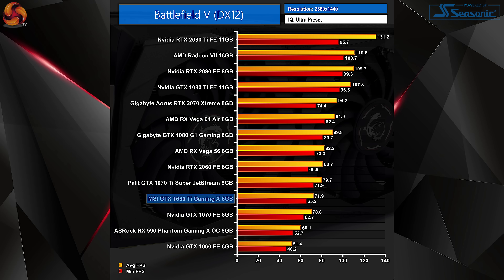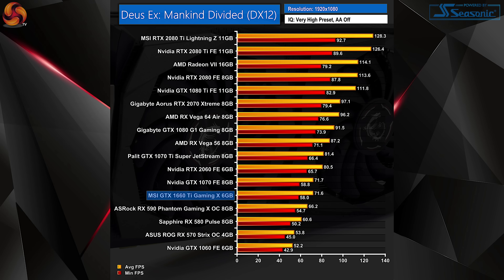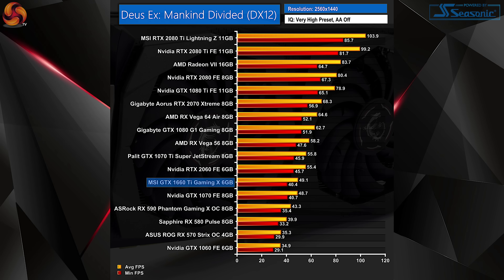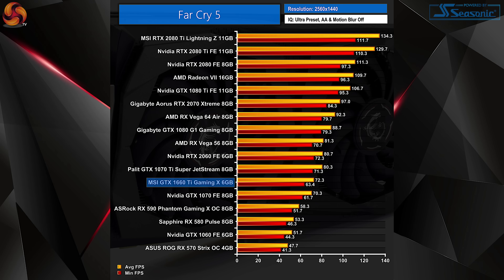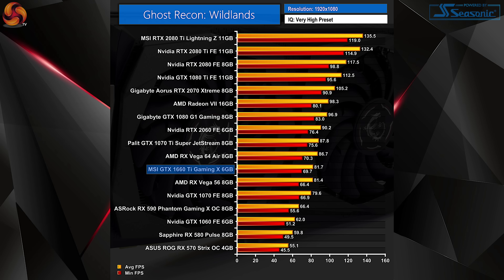It's easy to draw conclusions about the 1660 Ti's performance. As you can probably tell from the charts, it is essentially on par with a GTX 1070. Crunching the numbers, this MSI Gaming X is on average just 2% faster than a GTX 1070 Founders Edition at both 1080p and 1440p. Compared to the RTX 2060 Founders Edition, the 1660 Ti is on average 11% slower.